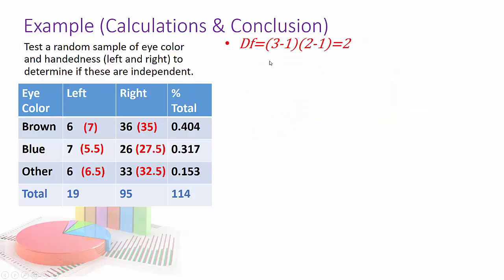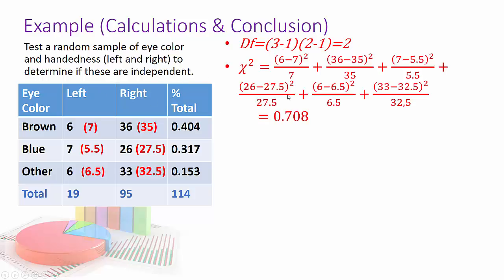All right. Degrees of freedom. There are 3 rows minus 1 times 2 columns minus 1. So that's 2 times 1 is 2. And here's my chi squared. It's observe minus expected squared divided by expected. So here's 7 and then 35, 5.5, and I get 0.708.